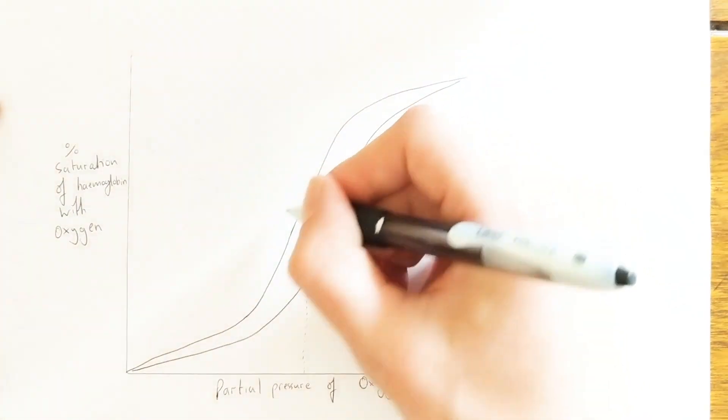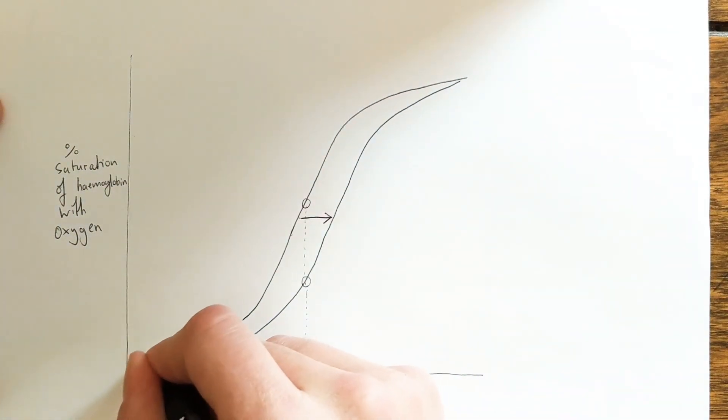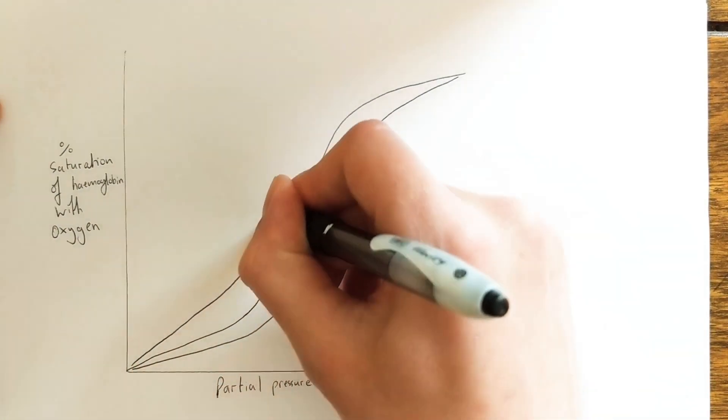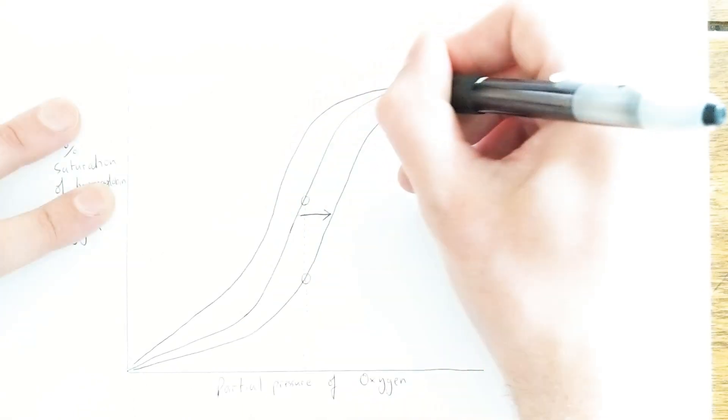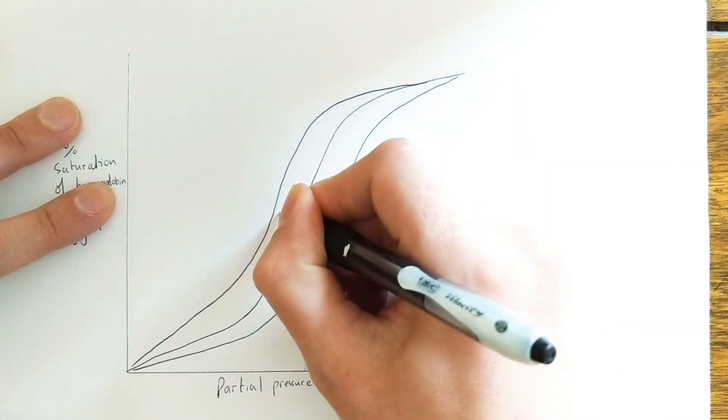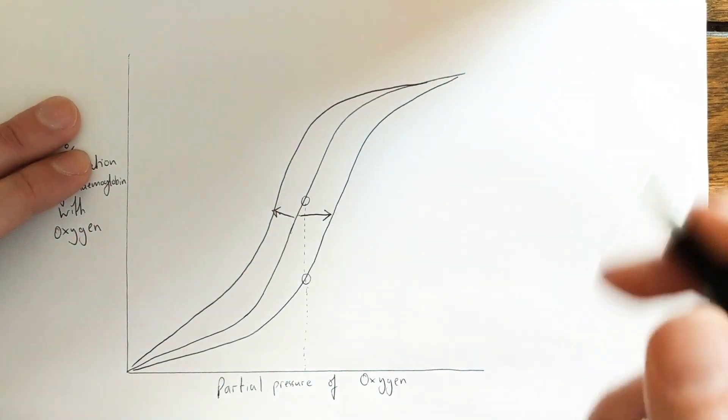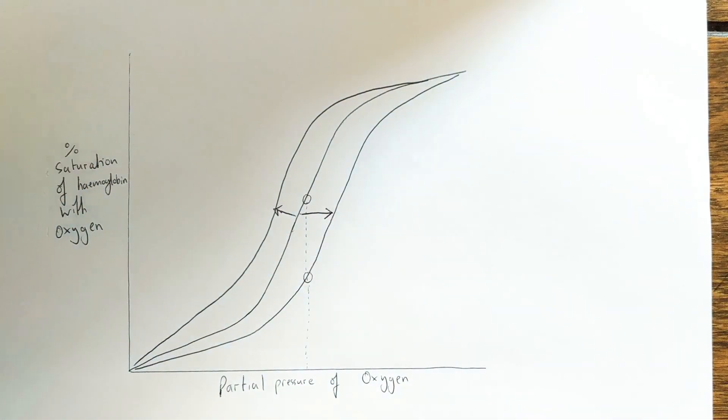Now just conversely, if CO2 levels are low, the line on this graph actually shifts to the right, and the hemoglobin has a higher affinity and a higher saturation of oxygen.